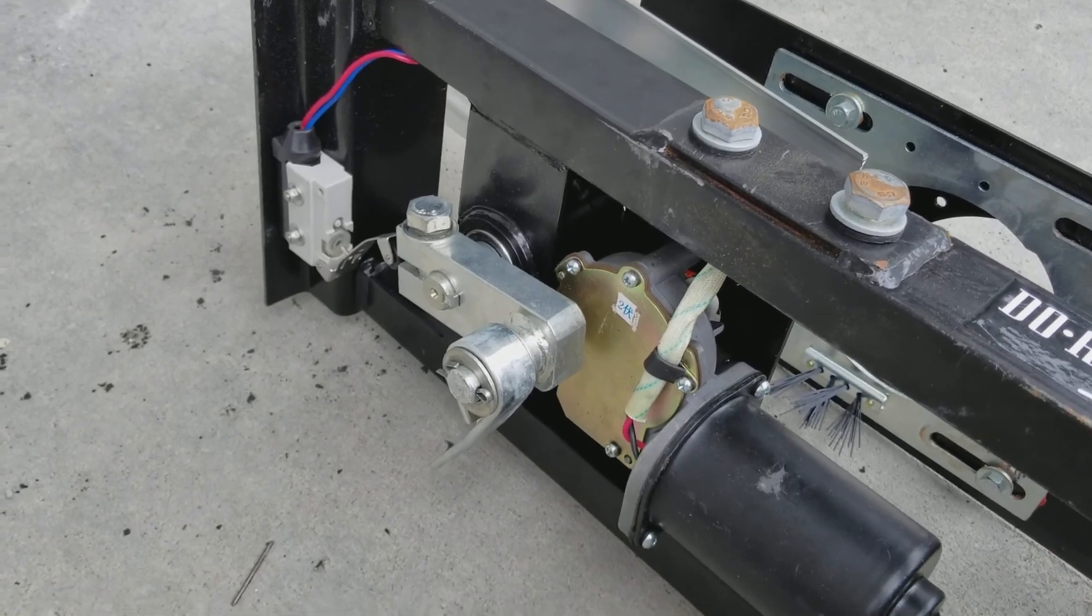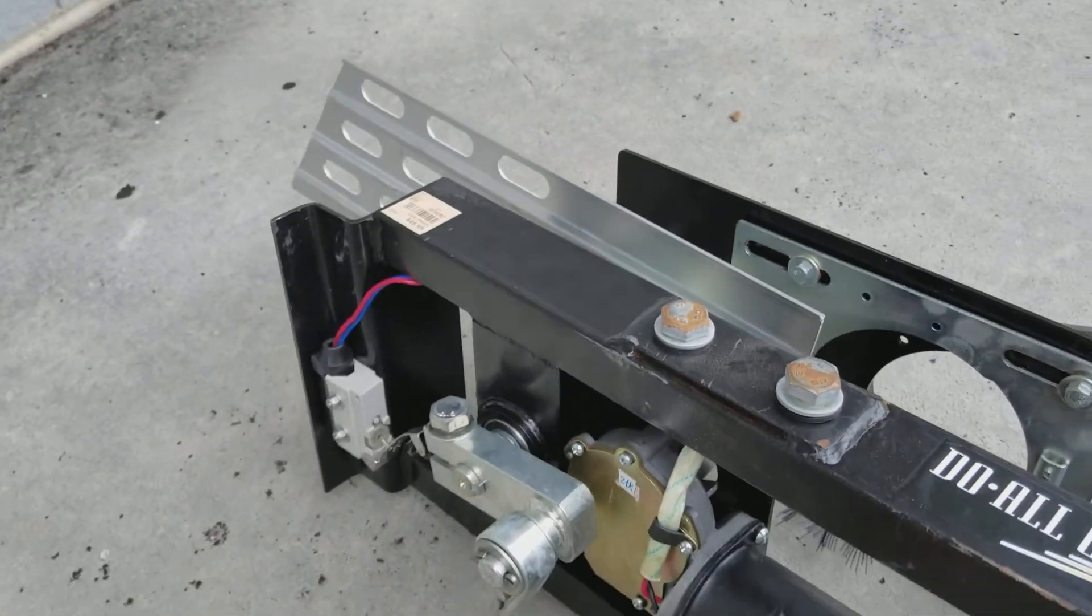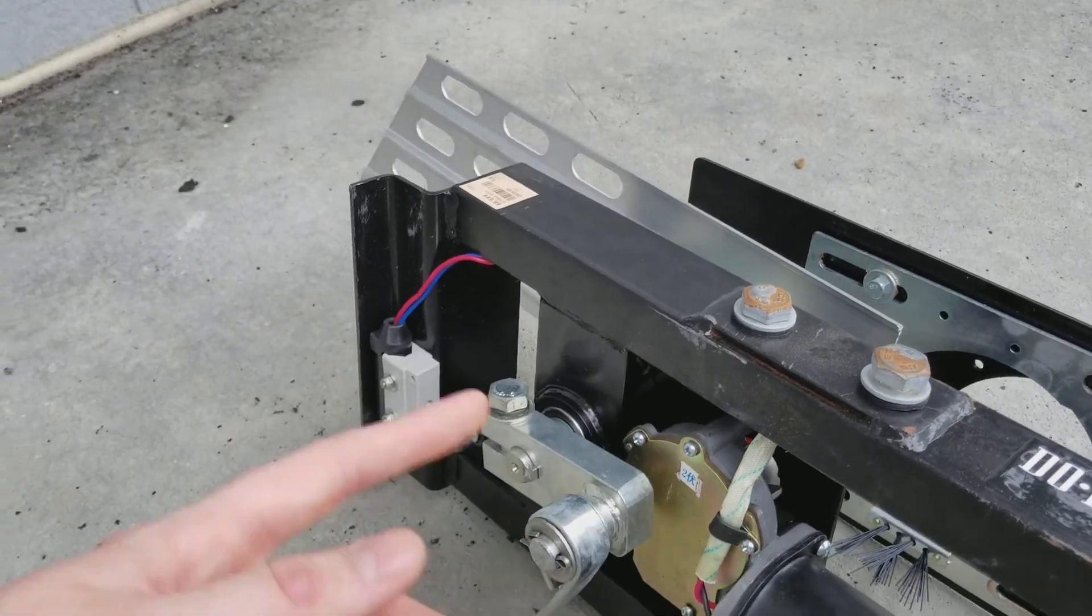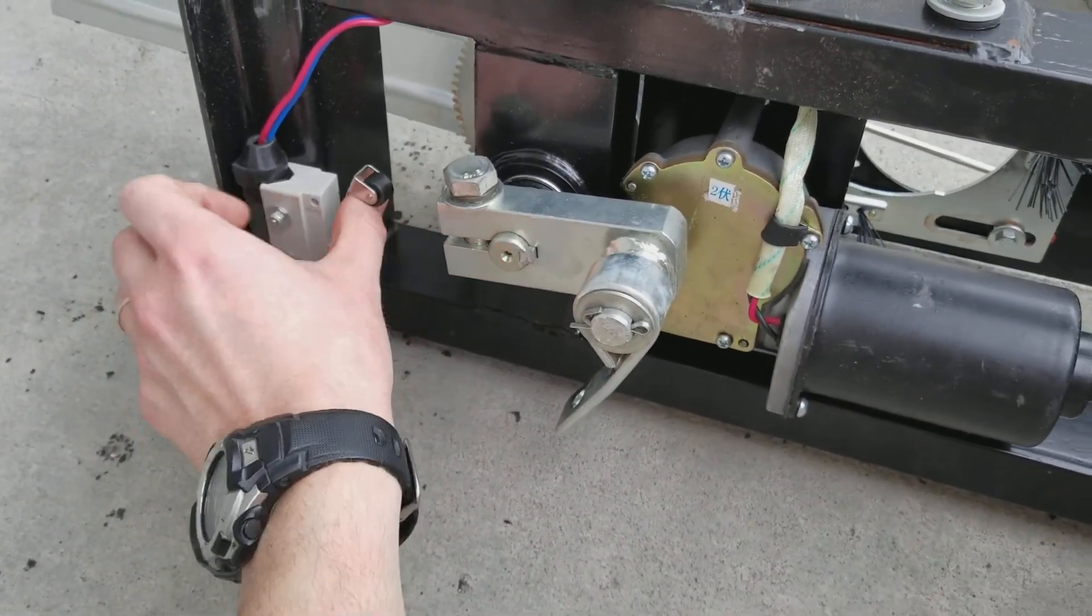Alright, now we're going to talk about the limit switch and adjusting it. If you have a thrower that just continuously goes around and around, it's this little switch right here you need to adjust.